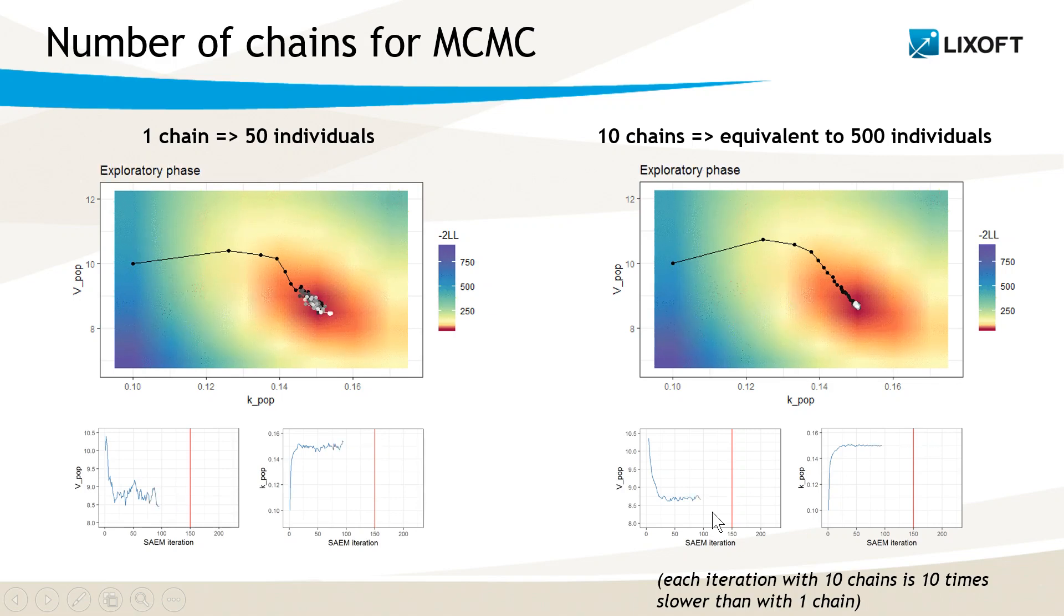By default, in Monolix, we set the number of chains in order to have the equivalent of at least 50 individuals. Because from our experience, that's the number required to have a trajectory that is stable enough and still pretty fast. For a large dataset with more than 50 individuals, the number of chains is 1. And for a dataset with 10 individuals, for instance, then the number of chains would be set to 5 by default.